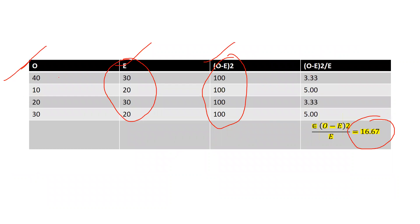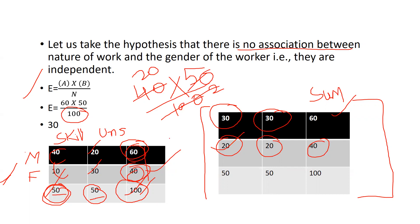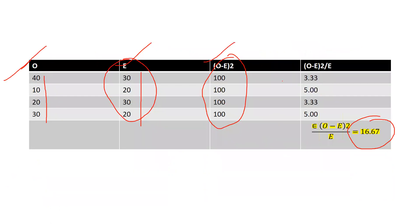Now we copy all observed values — 40, 10, 20, 30 — and expected values — 30, 20, 30, 20 — into the chi-square table. The first column reflects skilled labor and the second reflects unskilled labor. Then O minus E whole square: 40 minus 30 equals 10, squared is 100; 10 minus 20 equals negative 10, squared is also 100. Finally, we apply the formula O minus E whole square divided by E.